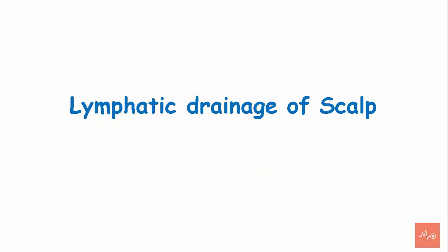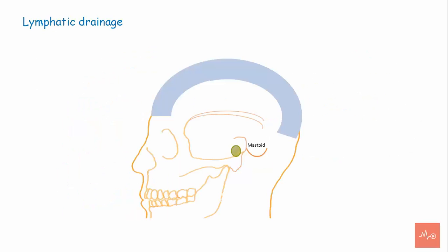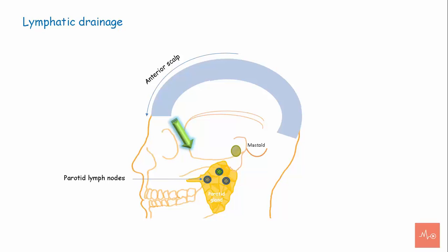The anterior part of the scalp drains into the parotid lymph nodes, or preauricular lymph nodes. The posterior part of the scalp drains into the mastoid and occipital lymph nodes, also called the posterior auricular lymph nodes.